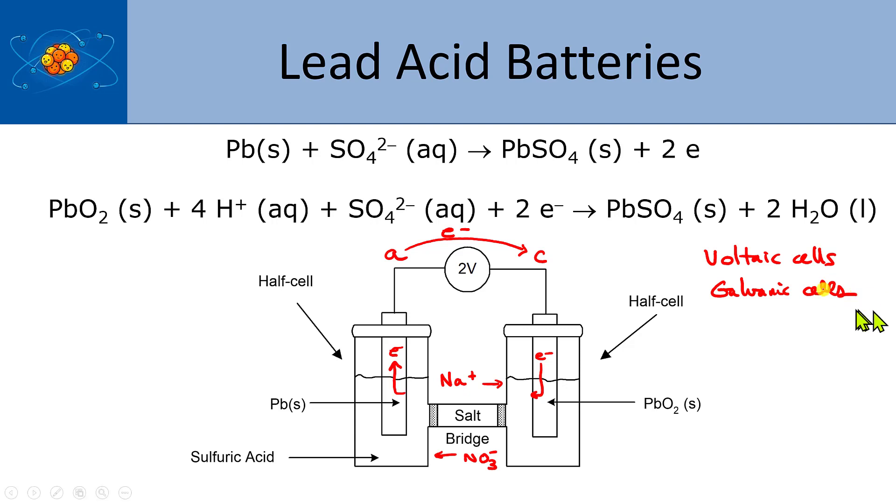They're called voltaic cells because of Volta. And Volta was making batteries and doing experiments with making batteries. And Galvani is famous because he was also doing similar things, but he was using it to shock frog leg muscles and show how frog leg muscles twitched when you applied an electrical potential to them. So he's kind of like one of the first neuroscientists. It's all middle 1700s stuff.